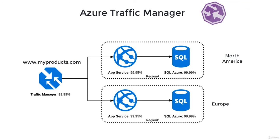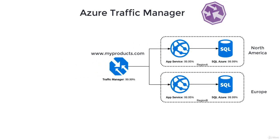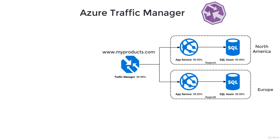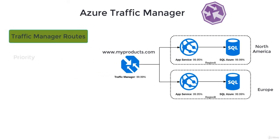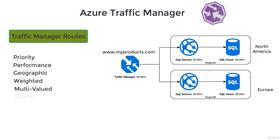Traffic Manager distributes traffic for large and complex deployments. It's important to understand the different routing methods it uses. In the next lessons, we'll cover four basic routing methods: Priority, Performance, Geographic, and Weighted. These methods can also be combined using what is known as Nested Traffic Manager profiles. Azure has recently added two more routing methods: multi-value and subnet routing. We'll talk about these one by one in the next lessons.